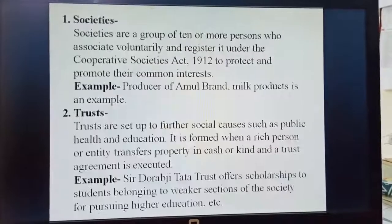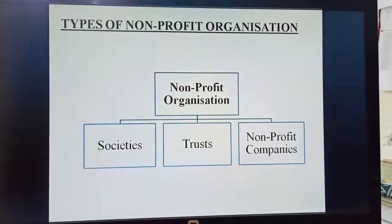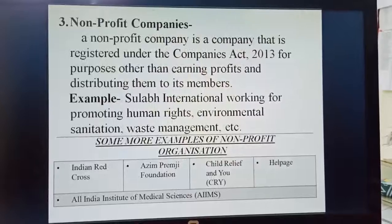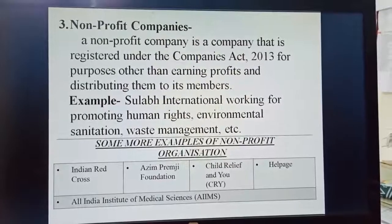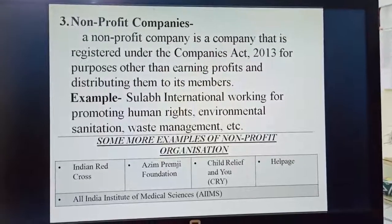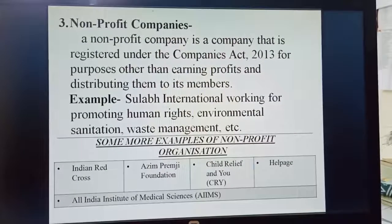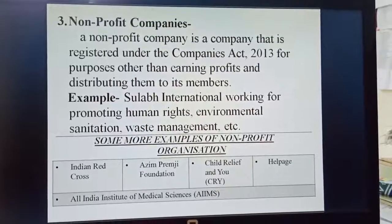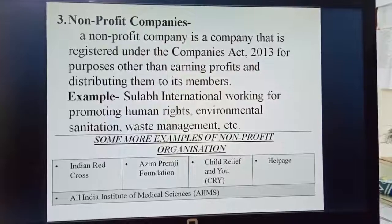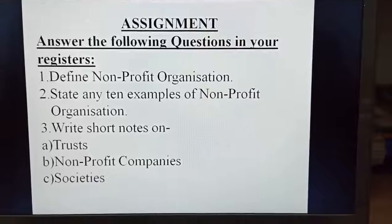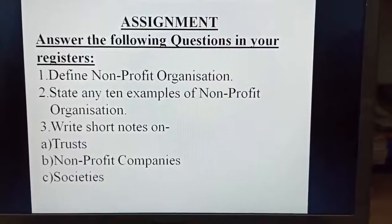So here we have discussed the three types of non-profit organizations: societies with their meaning and example, trusts with their meaning and example, and non-profit companies with their meaning and example. Some more examples of non-profit organizations include Indian Red Cross Society, Azim Premji Foundation, Child Relief & You (CRY), HelpAge, and All India Institute of Medical Sciences (AIIMS). These are the assignments which you have to do in your commerce registers.